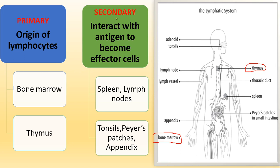The secondary type of lymphoid organs are those which interact with the antigens to become effector cells. After the maturation of B lymphocytes and T lymphocytes, they are released into our circulatory system — formed and matured in the thymus, released into the lymphatic system, and carried to be stored in certain regions. These include lymph nodes, tonsils, spleen, Peyer's patches, and appendix — all secondary lymphoid organs.